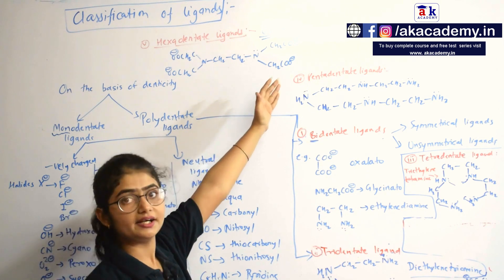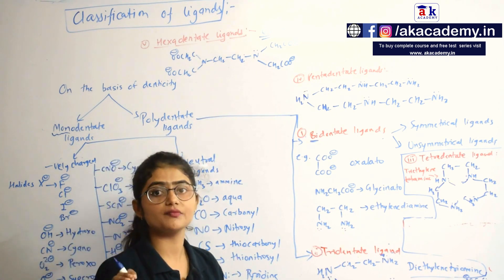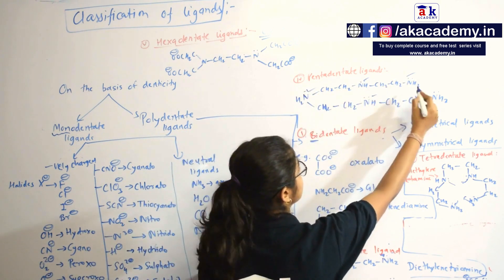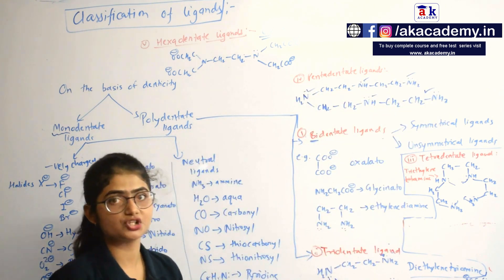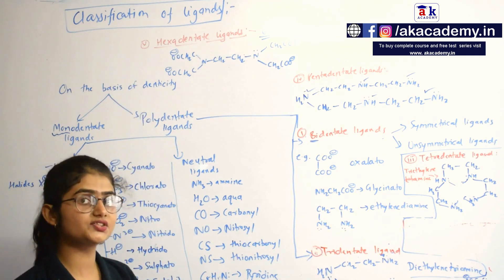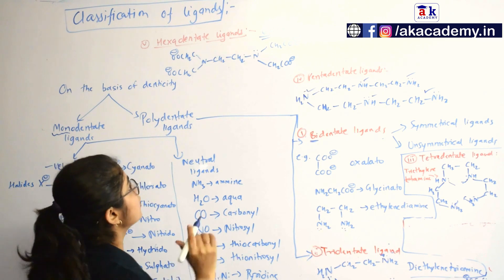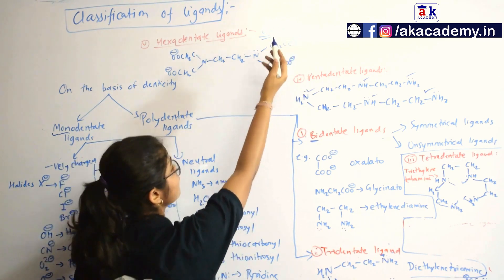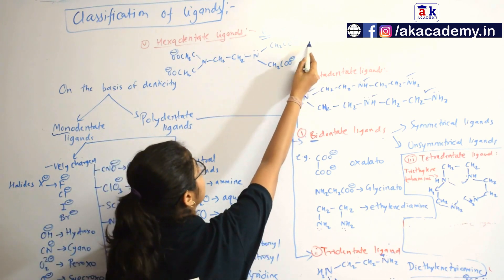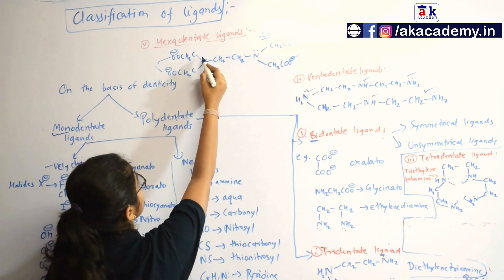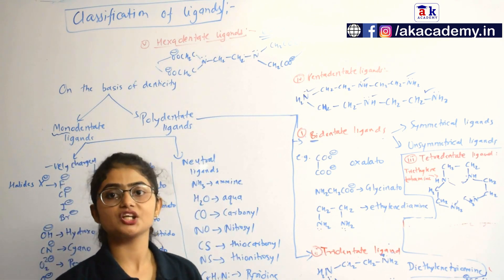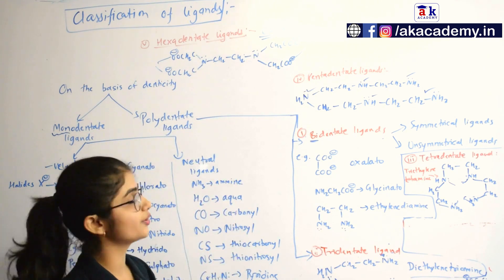Then we have the pentadentate ligand, with five sides of attachment to the metal. And lastly, the hexadentate ligand, which has six sides of attachment. The very famous example is EDTA — ethylenediaminetetraacetic acid — with four oxygen and two nitrogen donor atoms, giving six sites of attachment altogether. So it is classified as a hexadentate ligand.